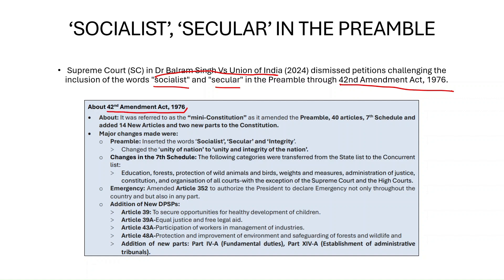In this context, we need to understand the 42nd Amendment Act of 1976. This is often referred to as the 'mini constitution,' which amended the preamble along with 40 articles and 7 schedules of the Indian Constitution, and added 14 new articles and two new parts. The major changes made in the preamble included the words 'socialist,' 'secular,' and 'integrity,' which were not originally present in the preamble.